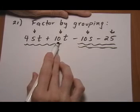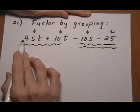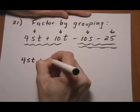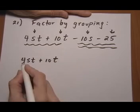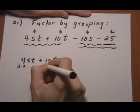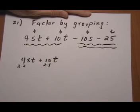If I have 4st plus 10t, I can think of the common factors here. So think of the 4 as 2 times 2. Think of the 10 as 2 times 5. So I can pull out a 2.